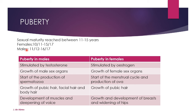Puberty is when sexual maturity is reached, usually between the ages of 11 and 15. In females it is 10 or 11 to 15 or 17 years; in males, 11 or 12 to 16 or 17 years. In males, sexual maturity is stimulated by testosterone; in females, by estrogen. This causes growth of sex organs, start of spermatozoa production in males, start of the menstrual cycle and production of ova in females, growth of pubic hair, facial hair, body hair, development of muscles, deepening of voice, growth of breasts, and widening of hips.